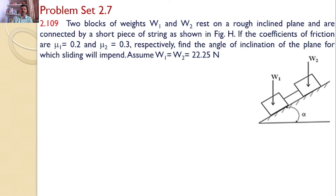Two blocks of weights W1 and W2 are at rest on a rough inclined plane and are connected by a short piece of string as shown in the figure. The coefficient of frictions are mu1 = 0.2 and mu2 = 0.3 respectively. Find the angle of inclination of the plane for which sliding will impend. W1 and W2 values are given as 22.25 Newtons.